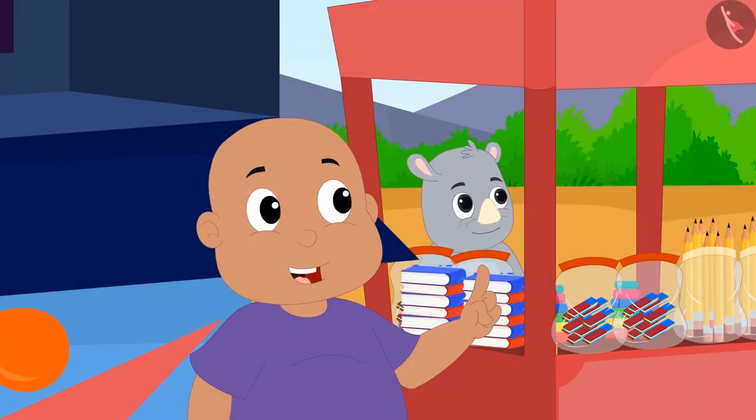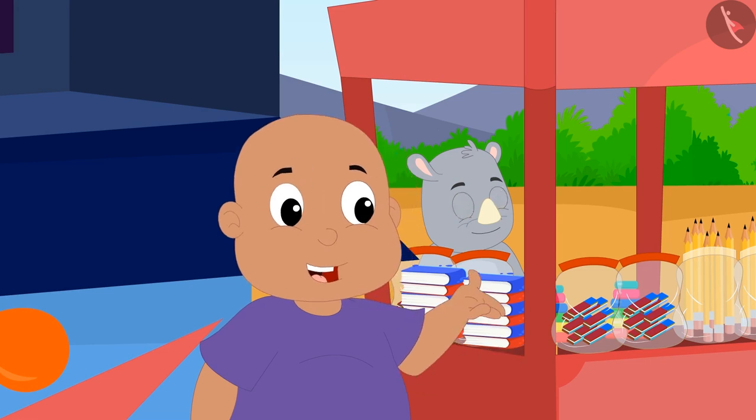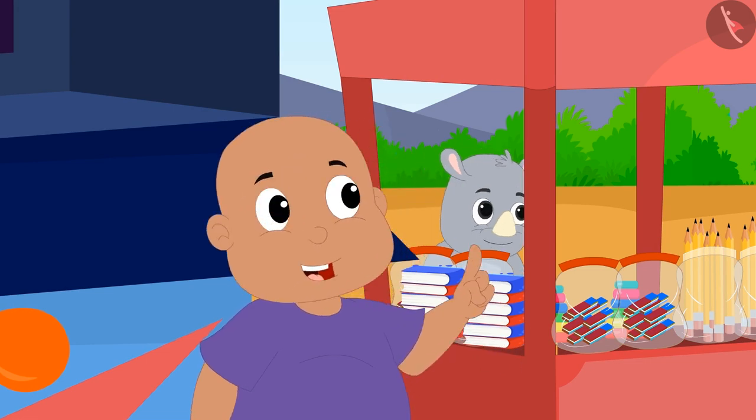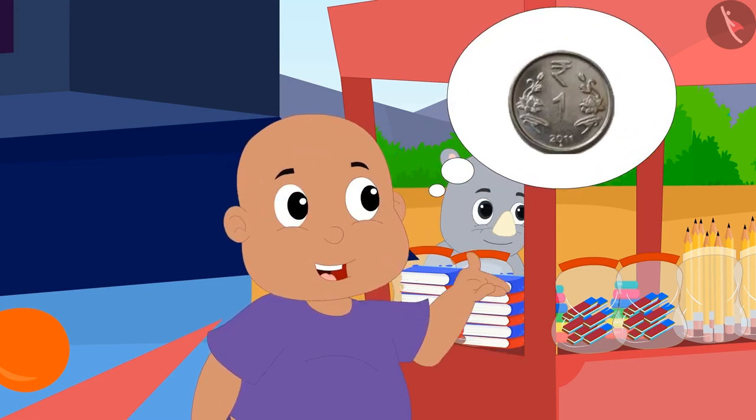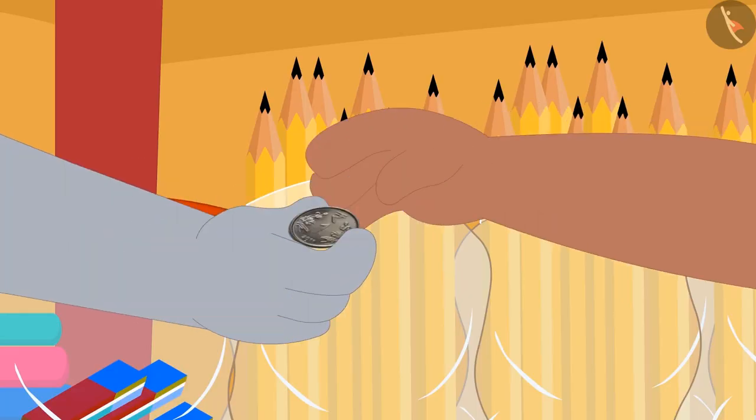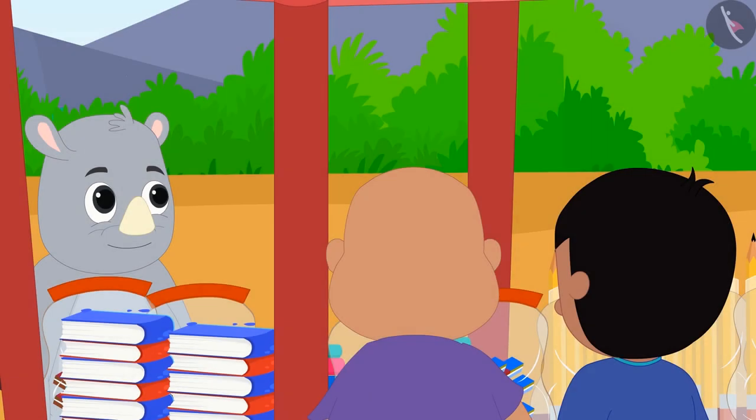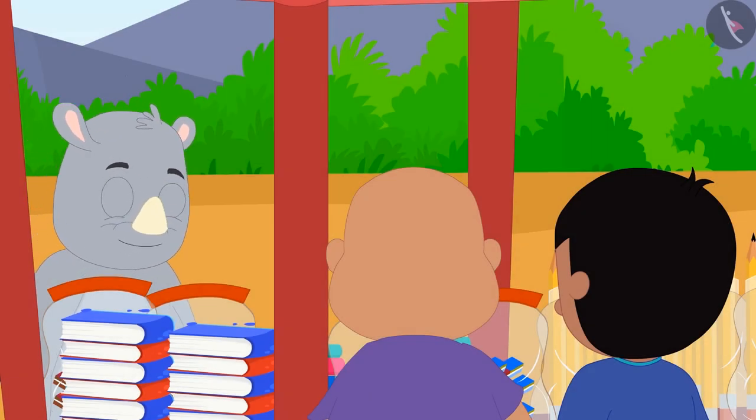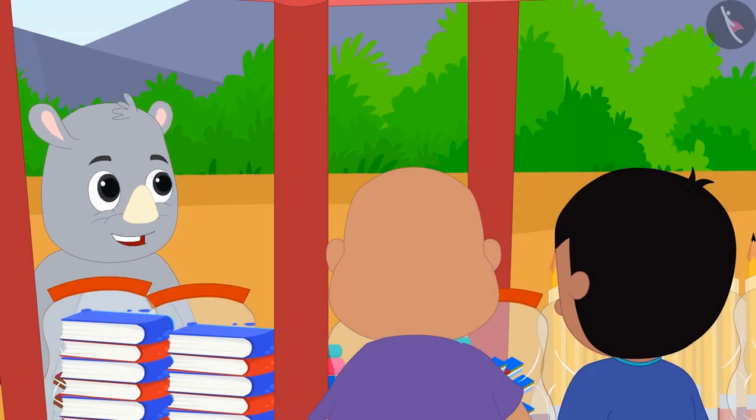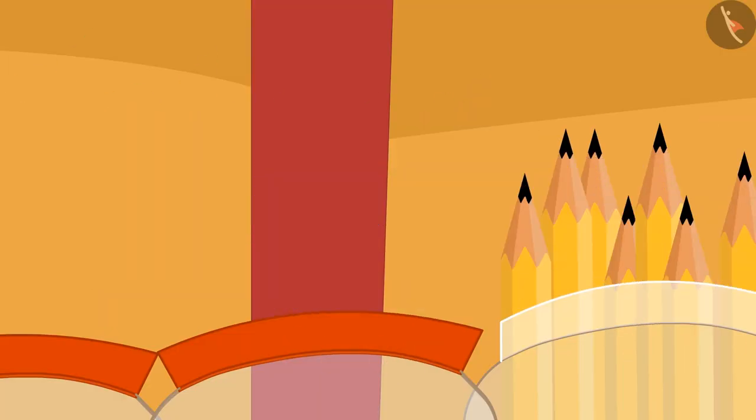Bablu too quickly did the math like us and found out that Gaggu gave him one rupee more. He promptly returned one rupee to Gaggu. Gaggu was happy to see the honesty of those children and gave them one-one pencil for free.